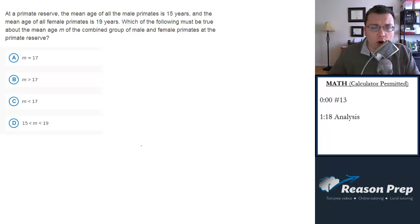At a primate reserve, the mean age of all the male primates is 15 years, and the mean age of all female primates is 19 years. Which of the following must be true about the mean age m of the combined group of male and female primates at the primate reserve?